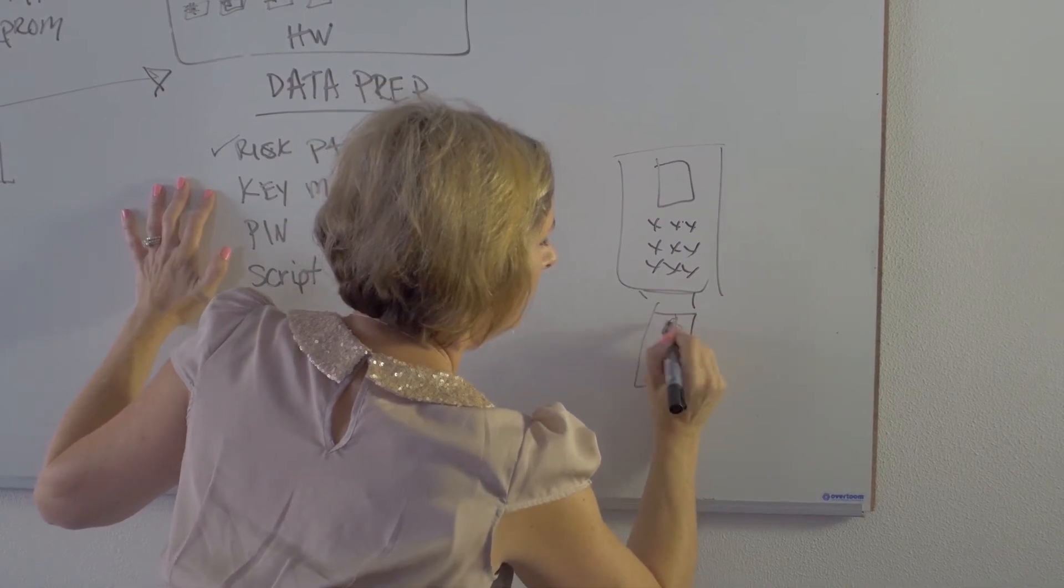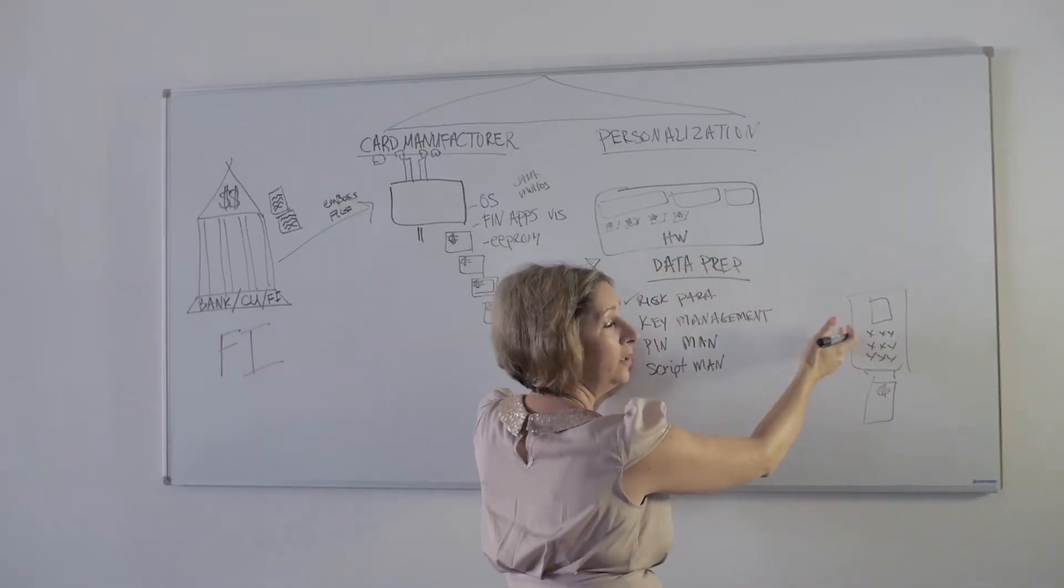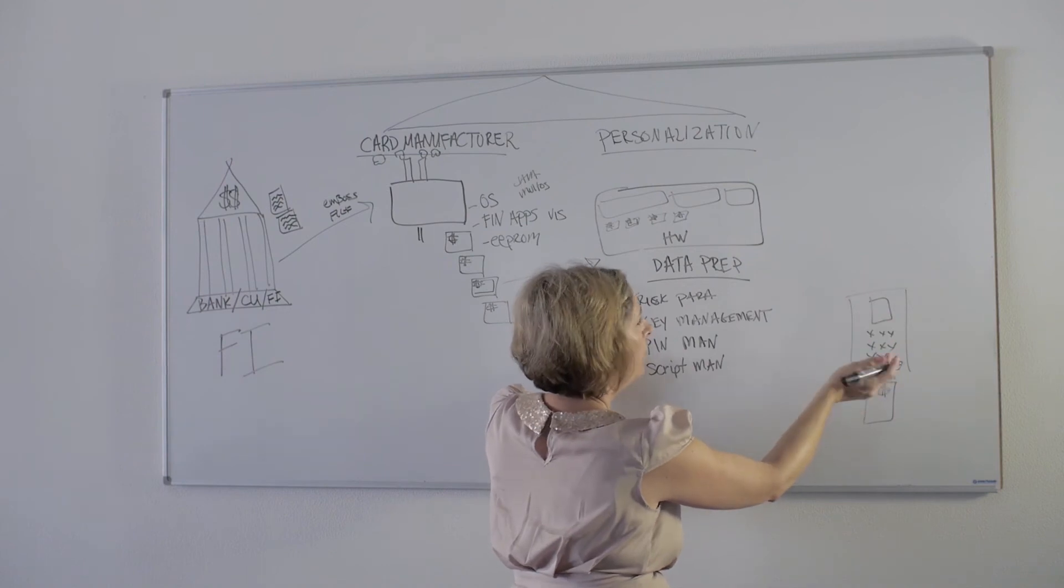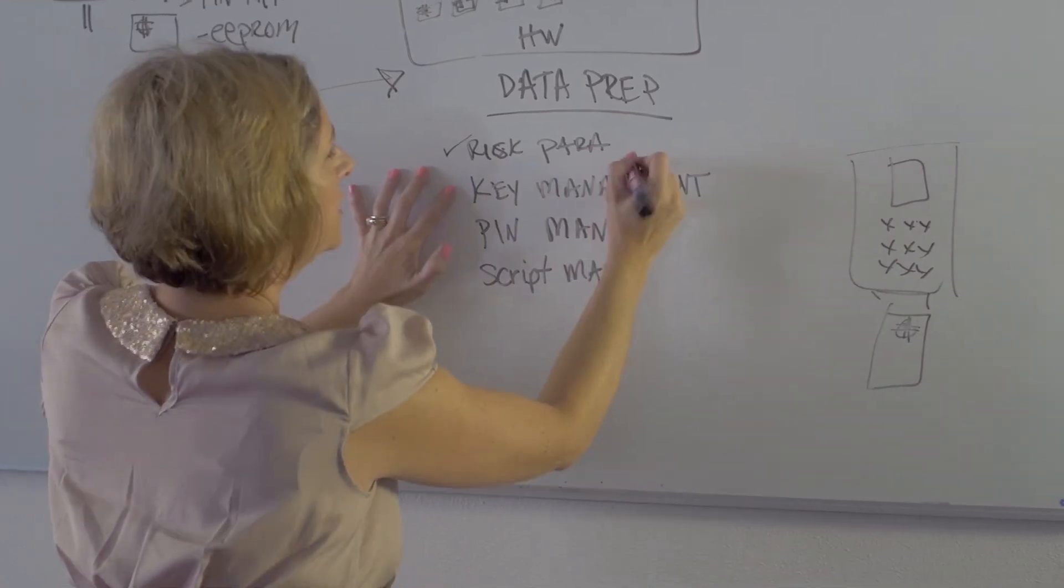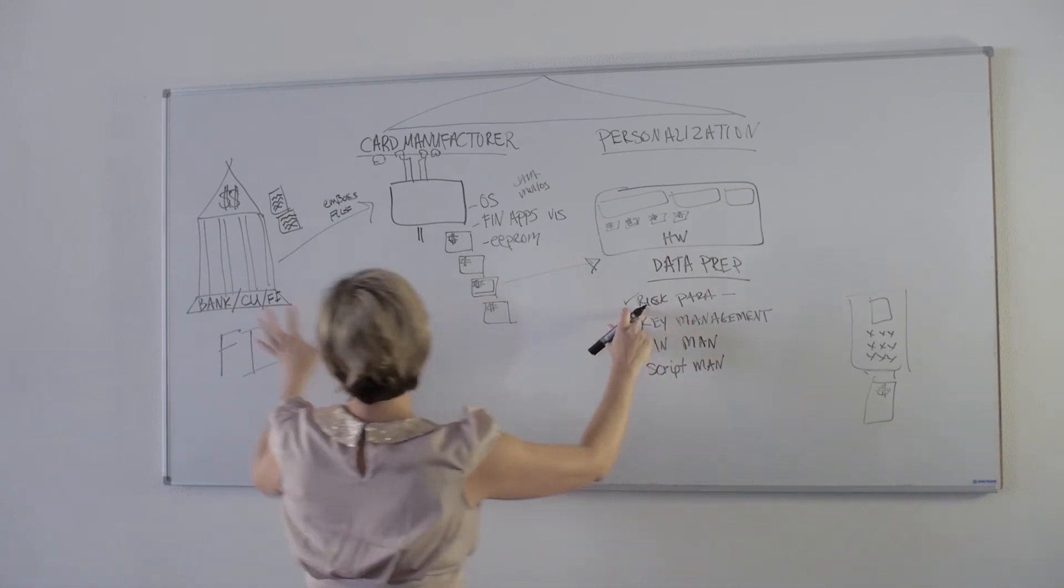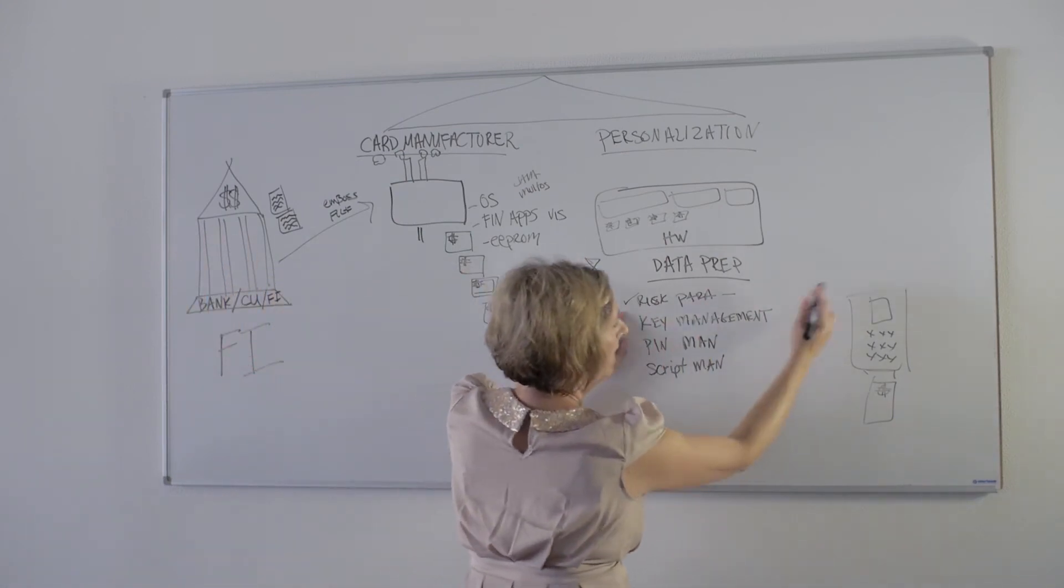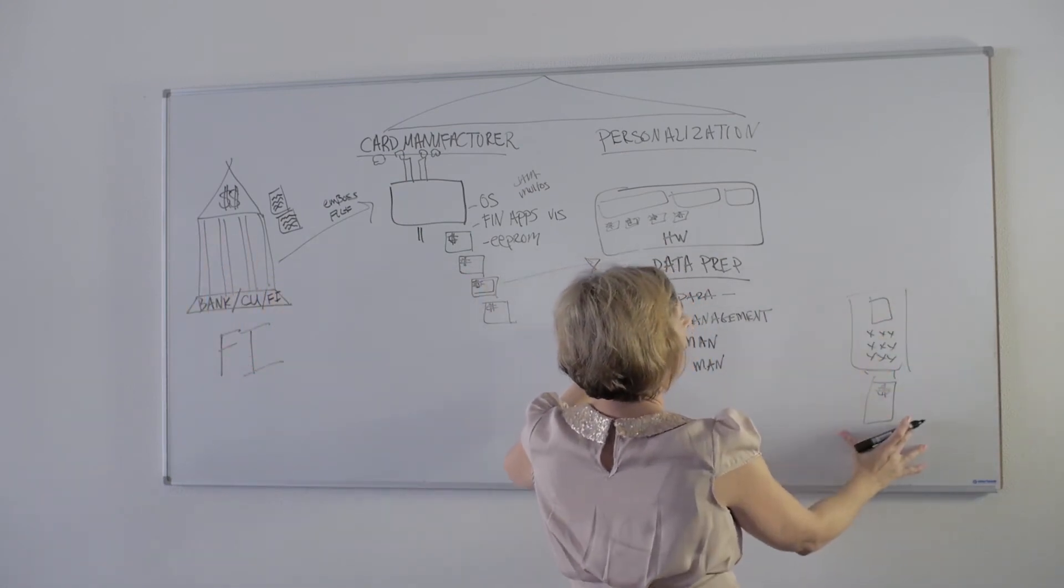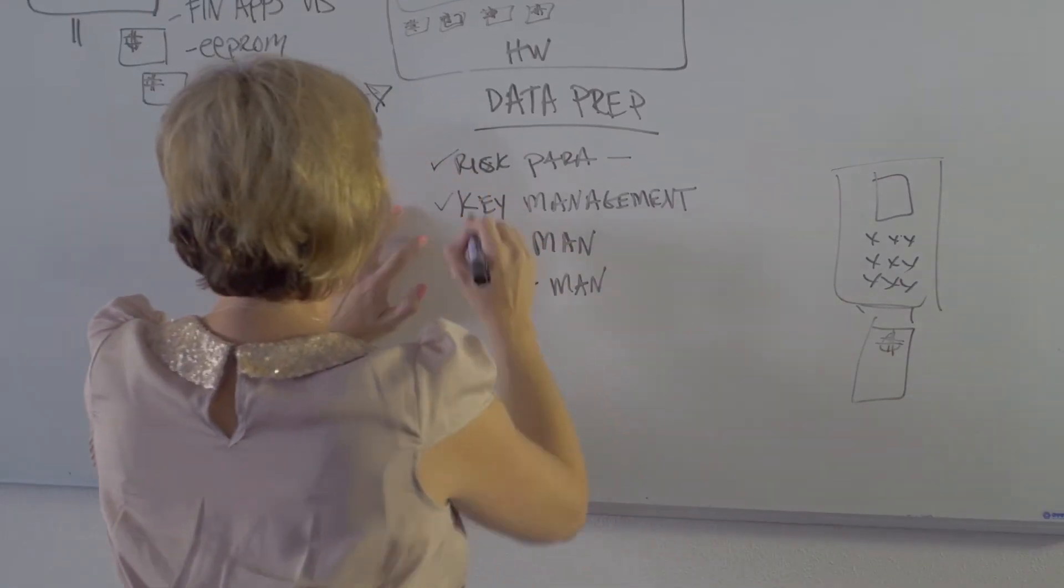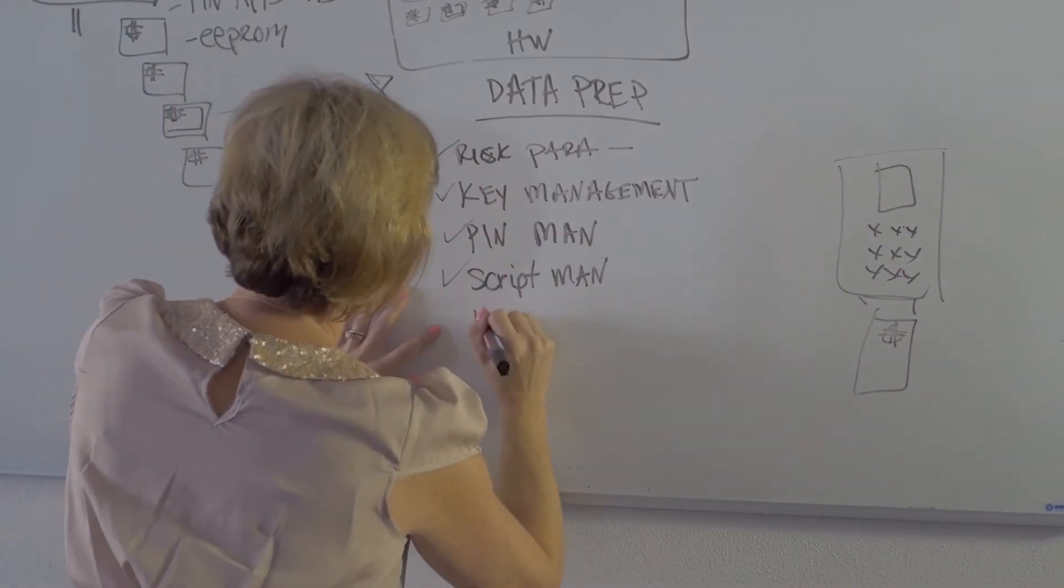How does this card perform? Online, offline, with a PIN, without a PIN, with a signature. Basically it maps out based upon the FI how they want that card to function in the field: key management, PIN management, script management, instant issuance.